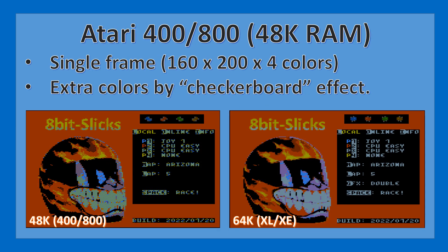Regarding the implementation for the Atari 400/800, we went down from 64k of RAM on the XL/XE to 48k, so some sacrifices had to be made. 8k was recovered by using a single bitmap frame instead of two — so you now have a single frame of 4 colors, whereas before two sets of 4 colors could be interleaved to produce extra colors.